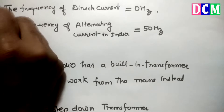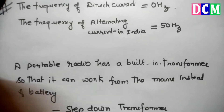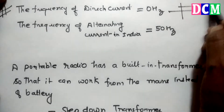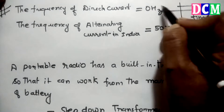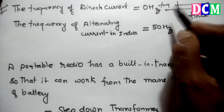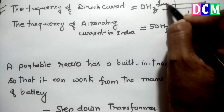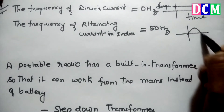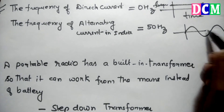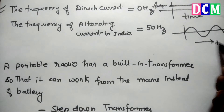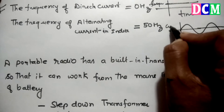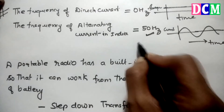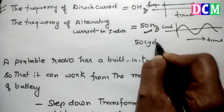The frequency of direct current is 0 hertz, meaning no change. If you plot DC, the value of the current remains fixed over time. For alternating current, in India its frequency is 50 hertz, also called 50 cycles per second.